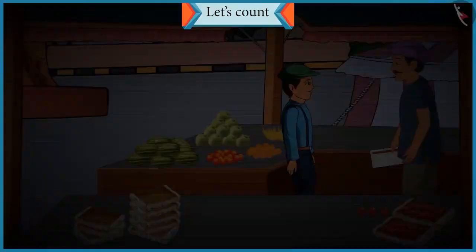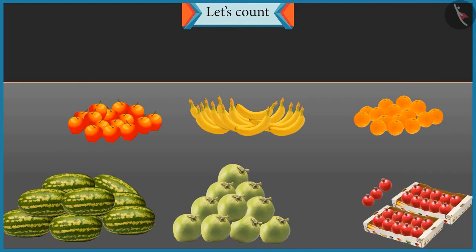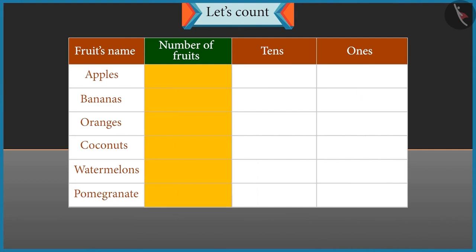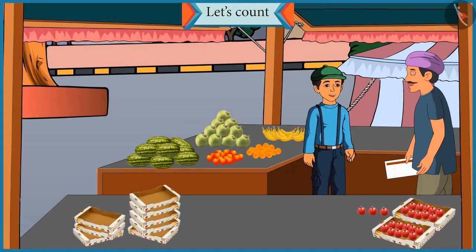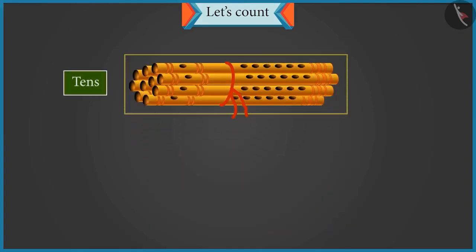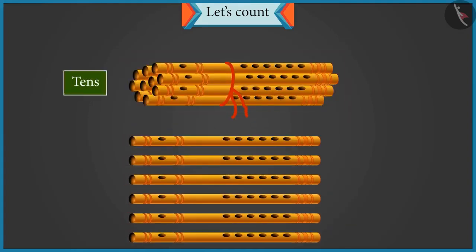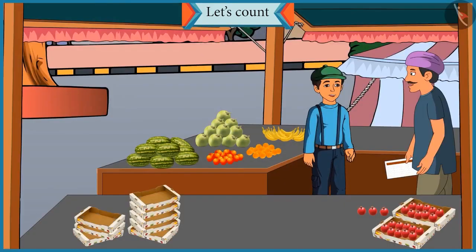Chotu, look. Different varieties of fruit are kept here. You have to count the fruits and tell their number. You also have to tell how many groups of ten are there in each, so that we can count them easily. Uncle, a group of ten means tens. In school, our teacher taught us that a group of ten is called tens, and less than ten are called ones. Okay, Chotu. So you count the fruits and tell me how we can show them in tens and ones. Okay, Uncle.